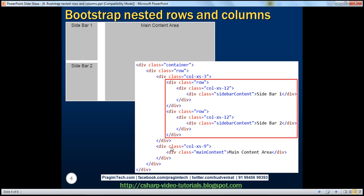We have not created this class yet — we'll do that in just a bit. This is the column for our main content and this is the column for our sidebar. Remember, within our sidebar we want two rows, so here we are nesting two rows inside this column. Within our first row we have another column. The fundamental principle is still the same: the number of columns in the nested row should also add up to 12 or fewer. Here we are using all 12 available columns, and this is the column for our sidebar 1.